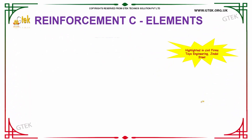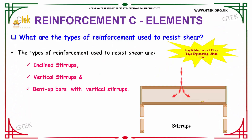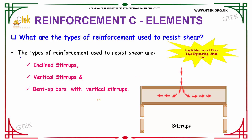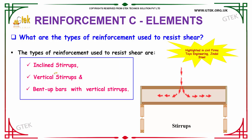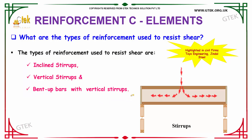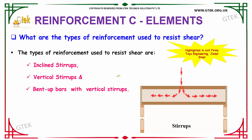Our next question is: what are the types of reinforcement used to resist shear? The types of reinforcement used to resist shear are: Inclined stirrups, Vertical stirrups, and Bent-up bars with vertical stirrups. So these are the types of reinforcement used to resist shear.